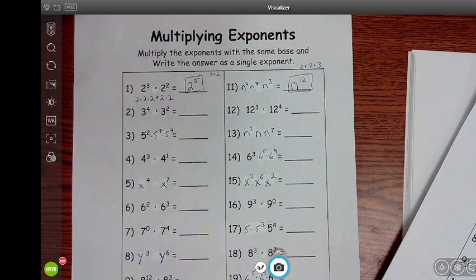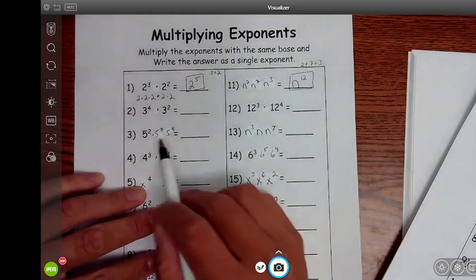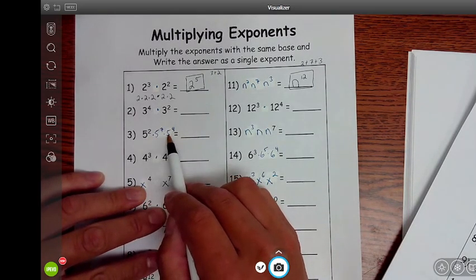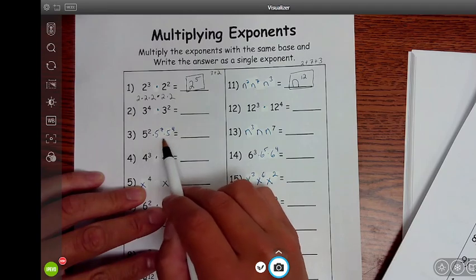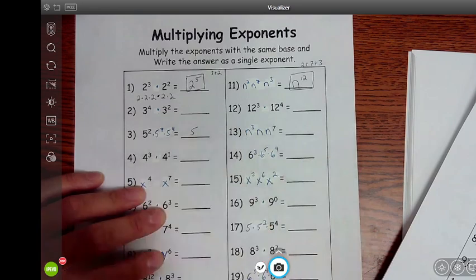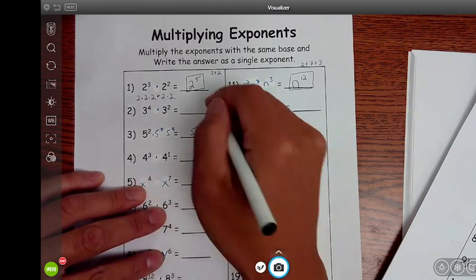All right, now let's take a look. Let's jump down to number 3. Same idea, nothing different. All the bases are the same. They're 5. Since all the bases are the same, in my answer, I'm going to keep the same base of 5. And then I'm going to add the exponents. When you're multiplying, you're going to add exponents.